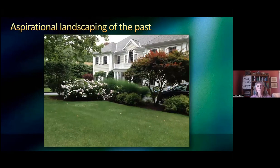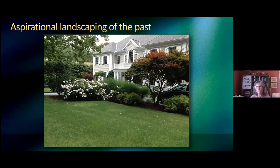I call this the aspirational landscaping of the past. This is what most people think of when they think of what they would call a nice front yard. It's got some hydrangeas, some non-native decorative grasses, some kind of tree, a few bushes, maybe a couple boxwoods, and it's got a broad swath of grass that basically functions as a biological desert.